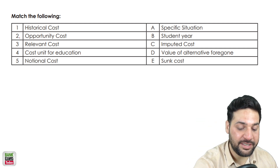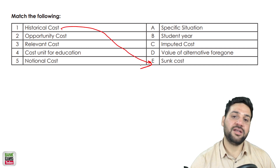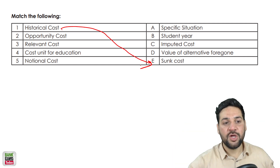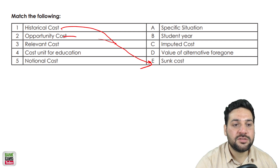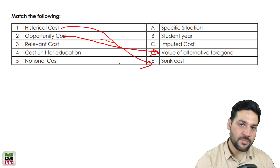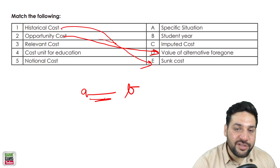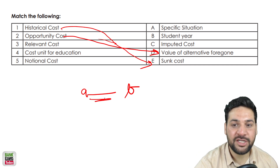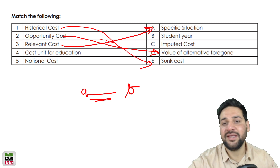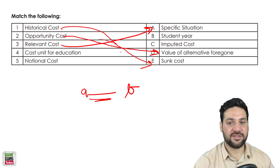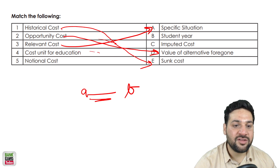Now match the following — very important. Historical cost is a sunk cost — already been done. Opportunity cost is the value of the alternative foregone: instead of choosing option A you chose B — how much money you lost is the opportunity cost. Relevant cost is a cost in a specific situation — you decided to do a particular project, so that cost becomes relevant to that decision.